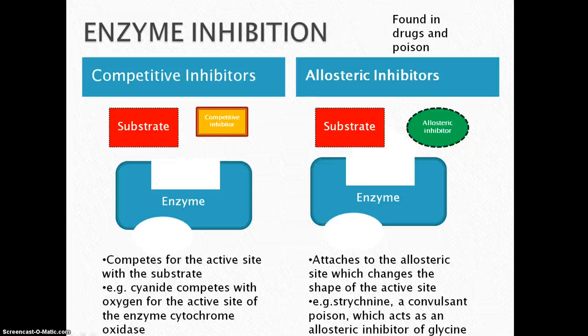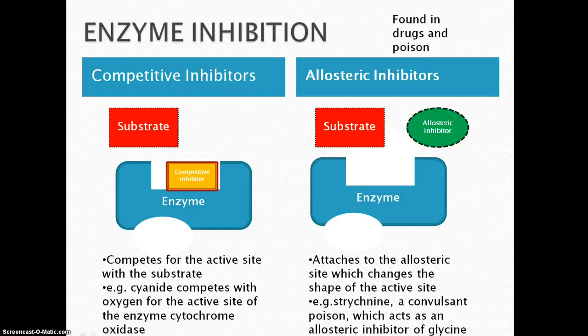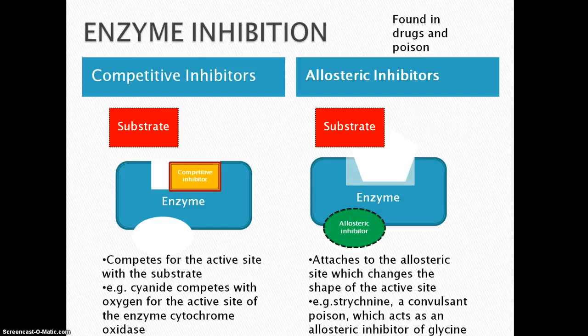Enzyme inhibition. There are two types. The first type is competitive inhibitors — they compete for the active site with the substrate. The second type is an allosteric inhibitor. It attaches to the allosteric site and changes the shape of the active site.